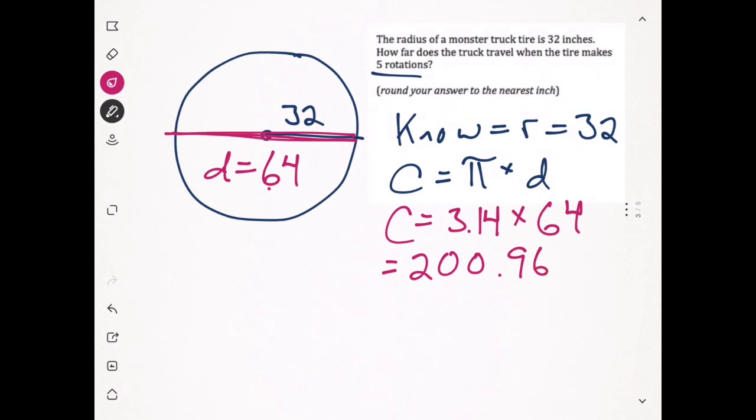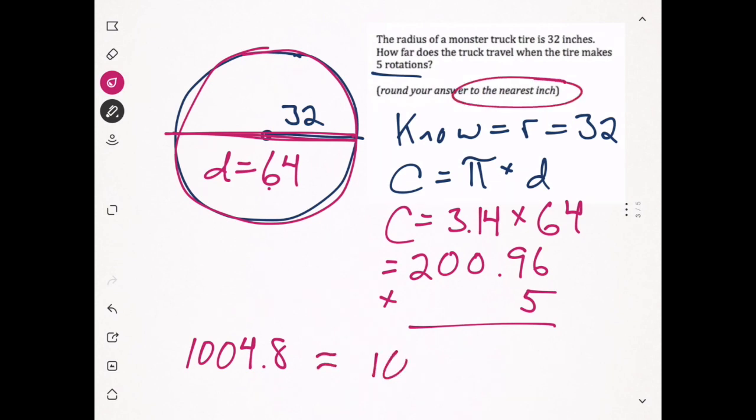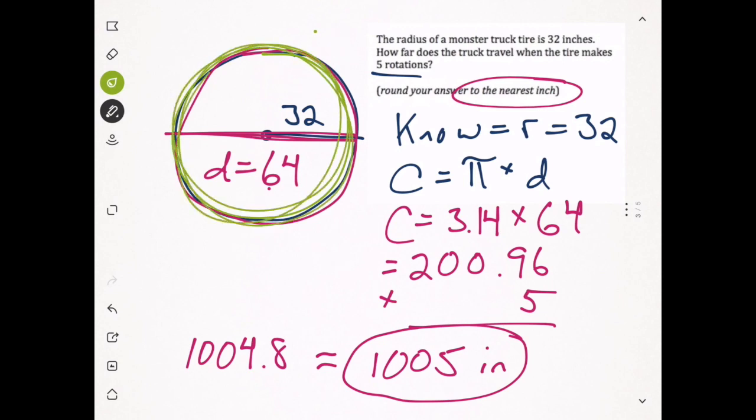But that would be one rotation of the tire. Our tire is going around five times, so we have to take this one rotation and multiply it by five. We get 1004.8, but it says round it to the nearest inch, so this would round up to 1005. When this monster truck tire goes around five times, it travels 1005 inches on the ground.